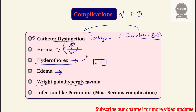Hypoglycemia may also occur. The most serious complication is peritonitis, which is a frequently asked question in many previous nursing exams and is the most important complication to remember.